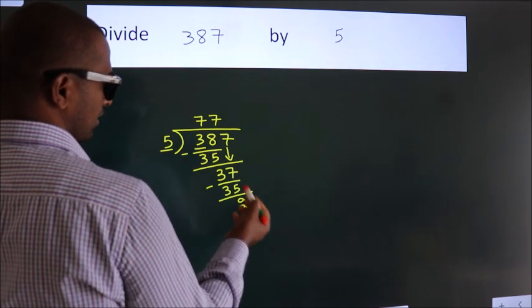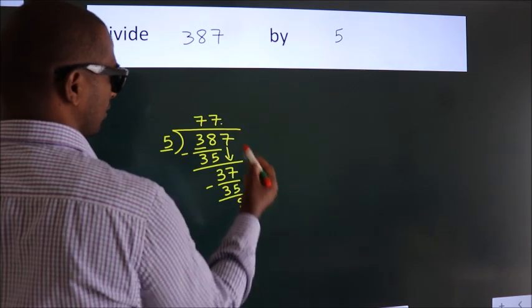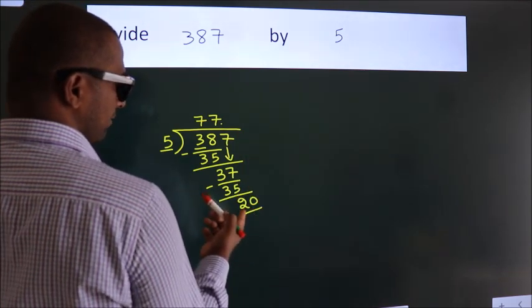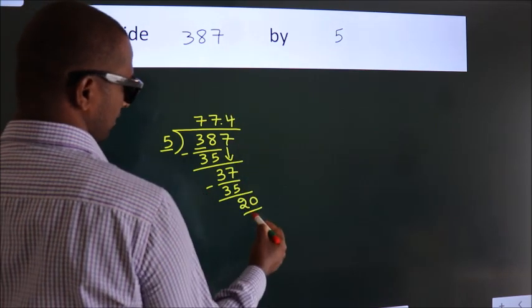After this, no more numbers to bring down. So what we do is we put a dot and take 0. So 20. When do we get 20 in the 5 table? 5 times 4 is 20.